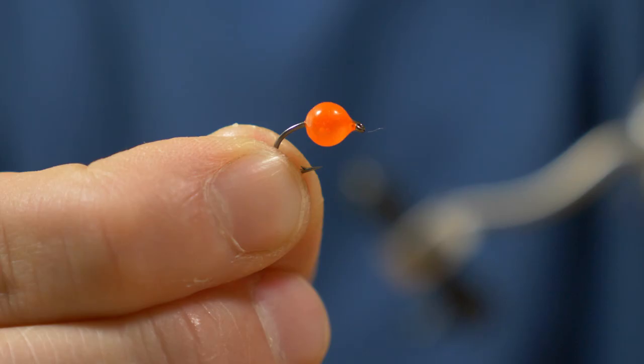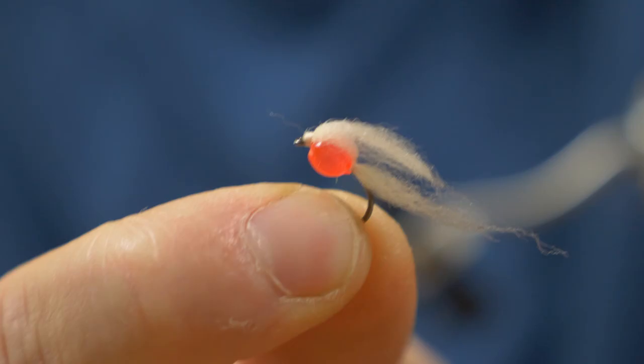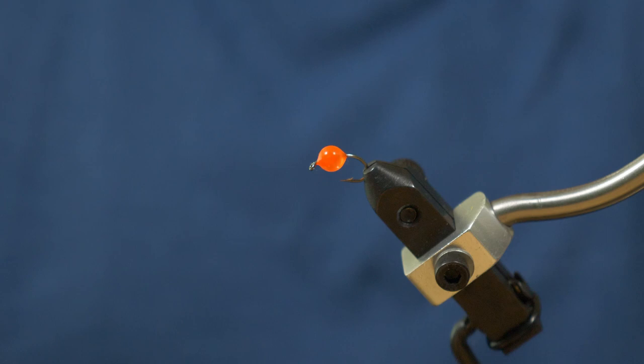Today we are tying a very durable alternative. It's a pattern I've been developing and it should work really well and should be much more durable than the otter soft milking egg. So let's have a look.